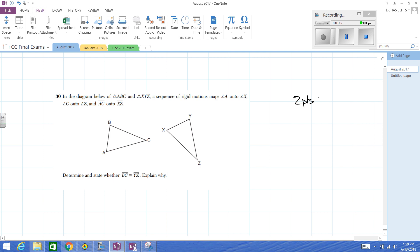Now, for this one, it's been a while since we've had to do this, but what they're telling us is there is a sequence of rigid motions that map angle A onto angle X, so those are congruent. Angle C onto angle Z, and AC onto XZ. The question is, is BC then congruent to YZ? Explain why.